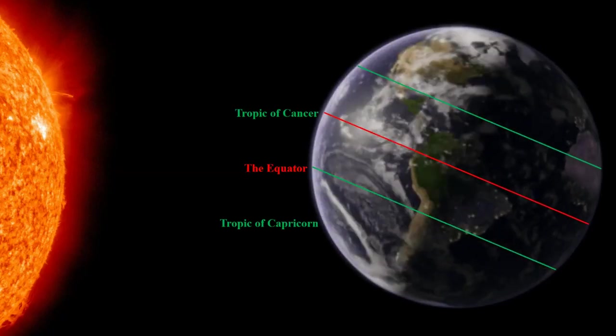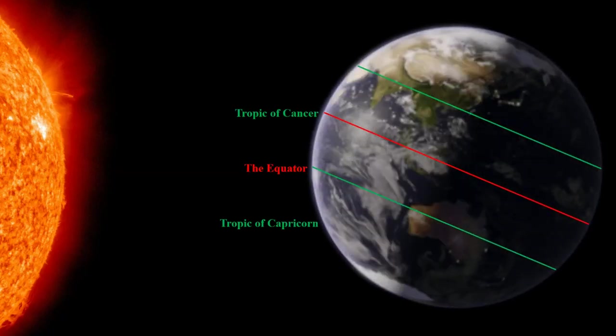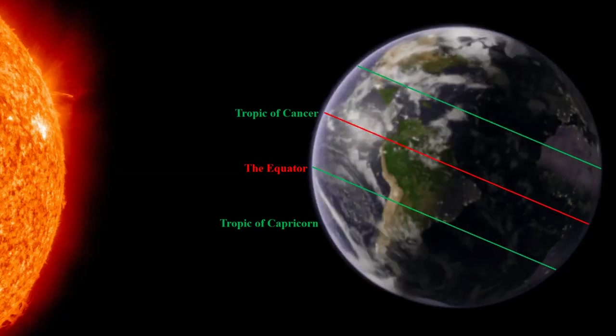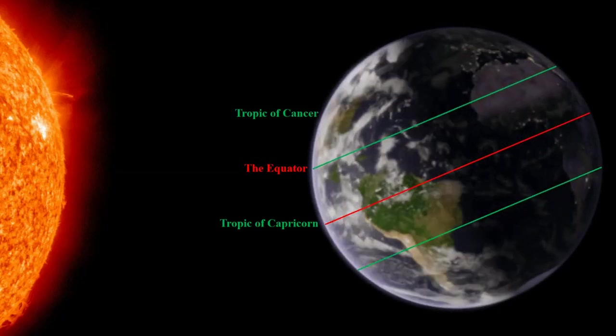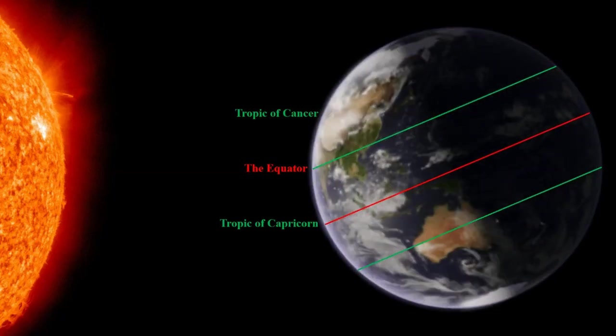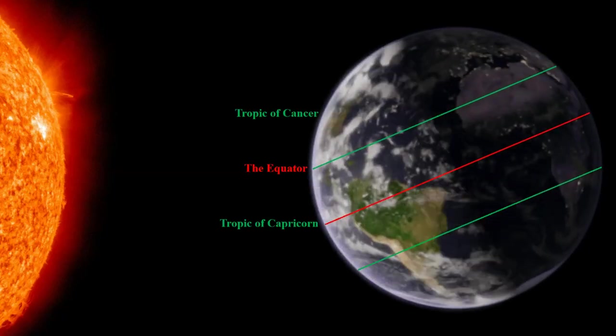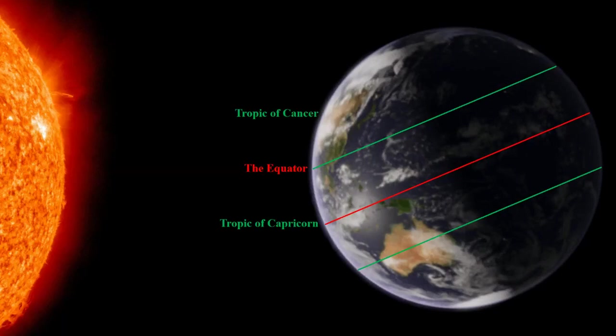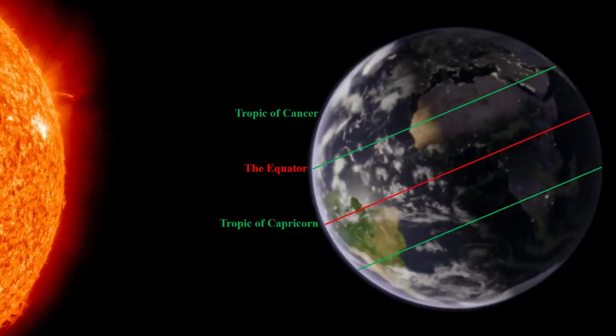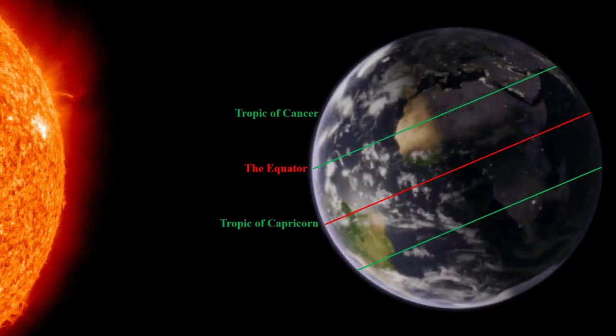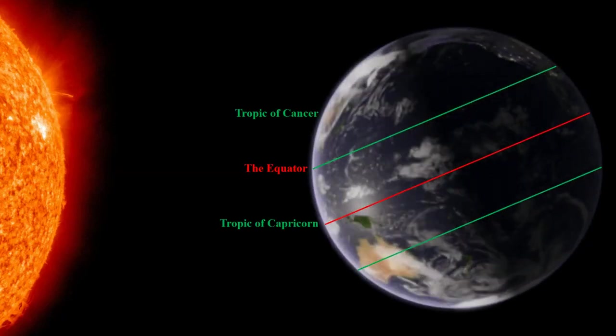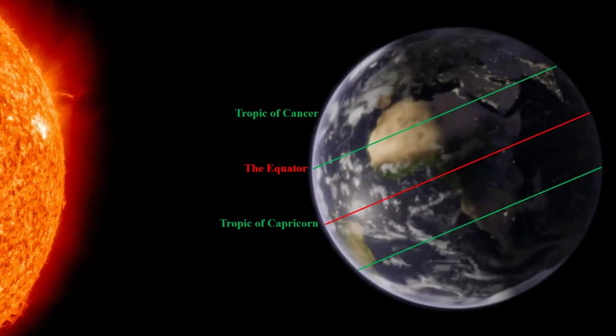Sometimes the Earth is tilted like this, so that the bottom is facing more towards the Sun. And then, as it orbits the Sun, it will find itself tilted the other way, where the top is facing more directly towards the Sun. Do you see here how the top green line, the Tropic of Cancer, is now the exact middle point, pointing directly towards the Sun? It's right where the equator would be when the Earth isn't tilted at all.